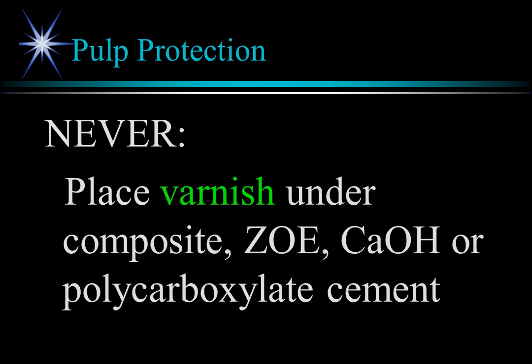Varnish is not currently recommended. If varnish is used, it coats the dentin and will not allow hybridization. It will not permit the obtunding or soothing property of zinc oxide eugenol preparations to reach the pulp. It inhibits calcium ions from reaching the dentin and prevents chelation of polycarboxylate cement with the dentin.